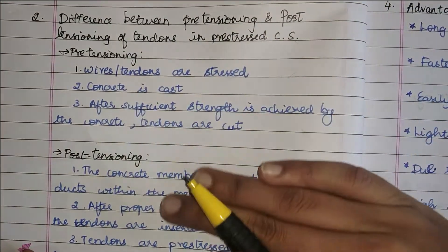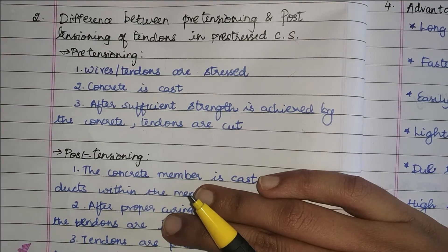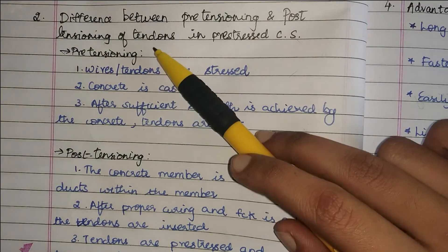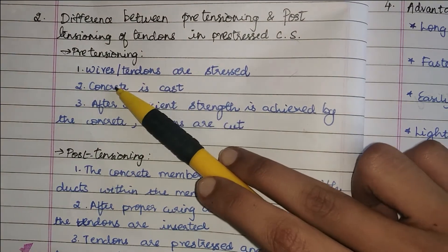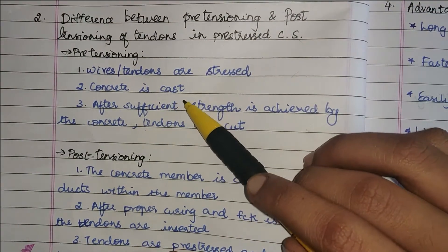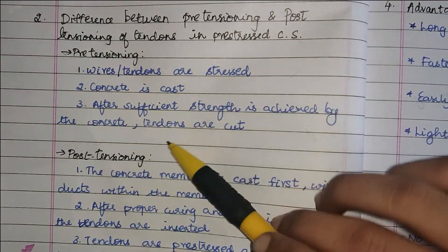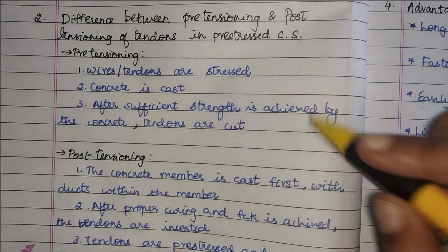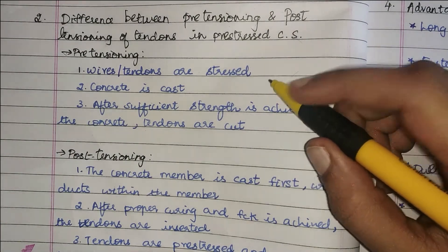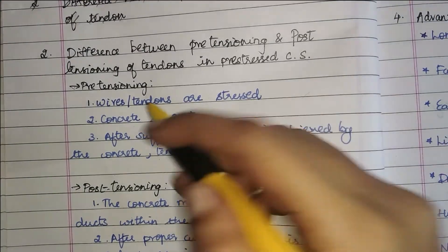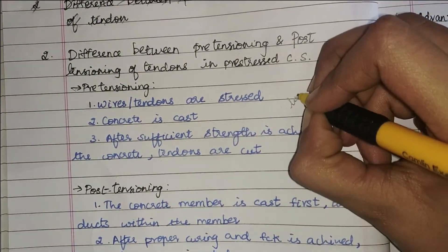The next question is the difference between pre-tensioning and post-tensioning in pre-stressed concrete structures. In pre-tensioning, first the wires or tendons are stressed — they are pulled — then the concrete is cast, poured, and allowed to achieve sufficient strength, after which the tendons are cut. The stress is transferred only through the bond strength over the transmission length of the tendon.